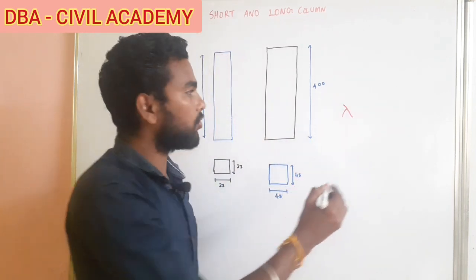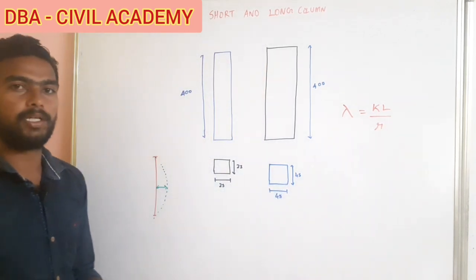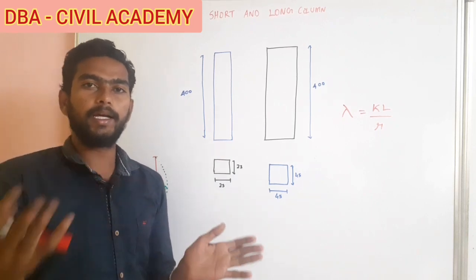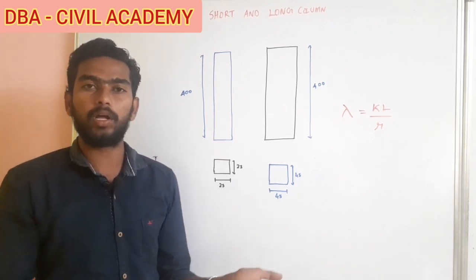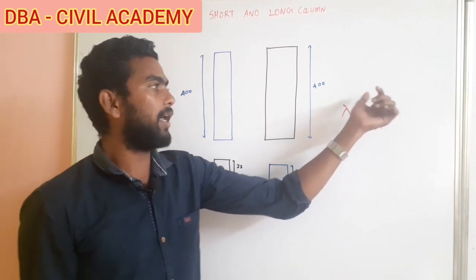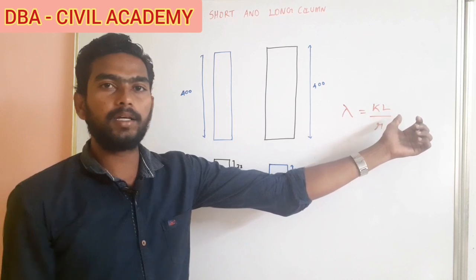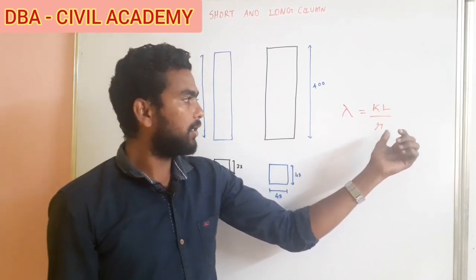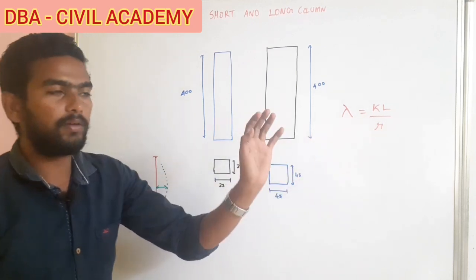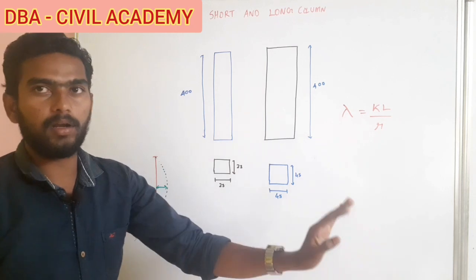Lambda is nothing but KL divided by R. K is the coefficient for end conditions — fixed, pinned, or roller — and the end condition changes the coefficient. L is the length of the column, and R is the minimum radius of gyration. By substituting values into this formula, we get values for short column or long column.